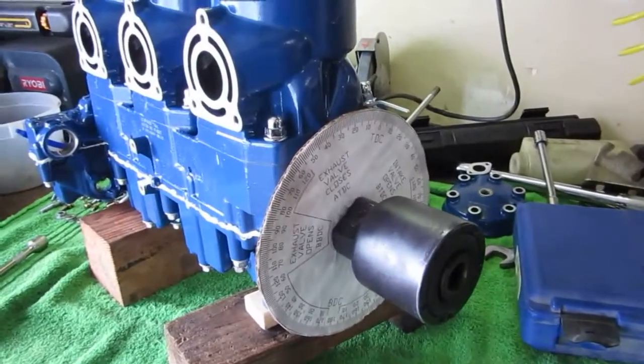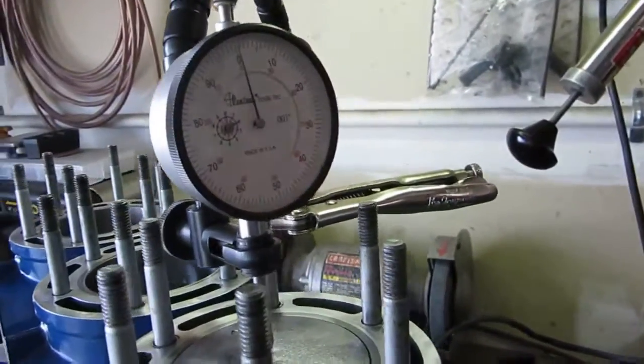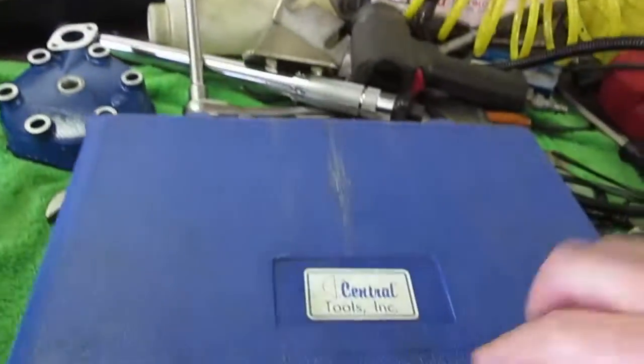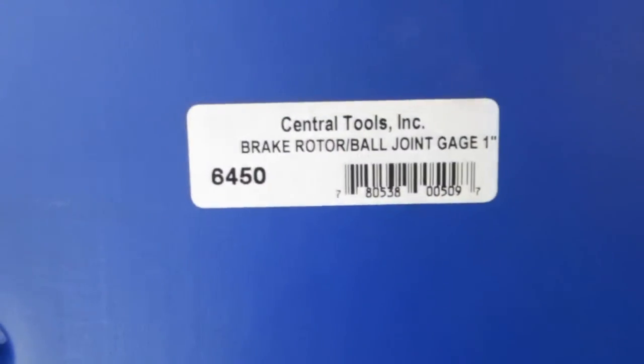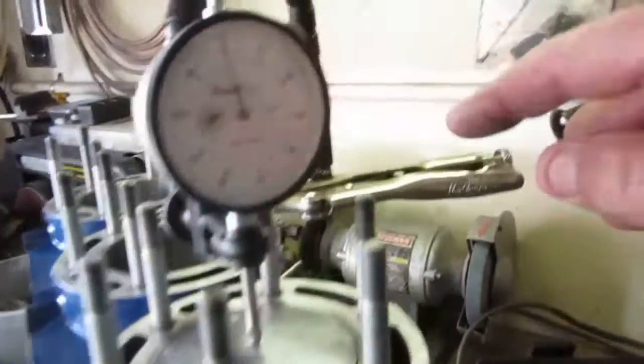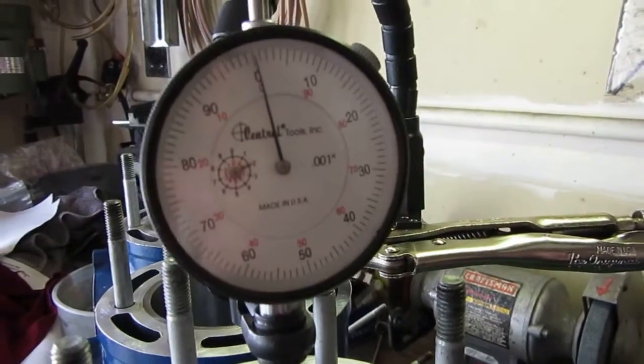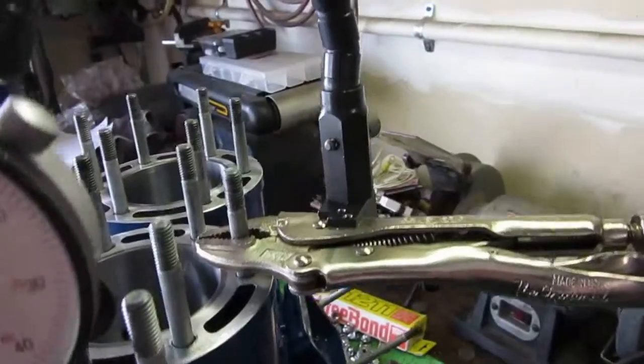So the tools you'll need is a dial indicator. You can buy these at Harbor Freight. Look down here. This is Central Tools & Company. That's the part number 6450. It's a brake, rotor, and ball joint gauge. And this is what it looks like. It comes with the gauge and the vise grips. And you just have to adjust it to work.